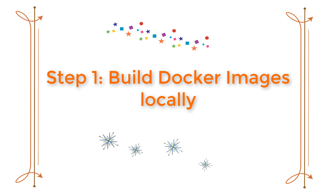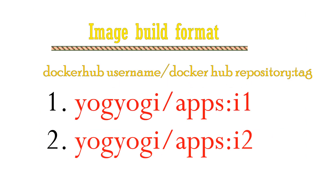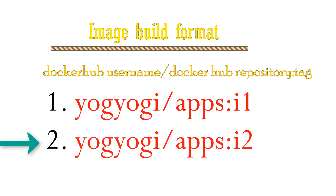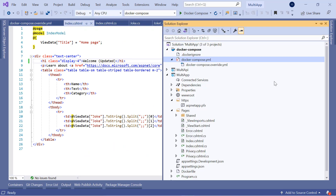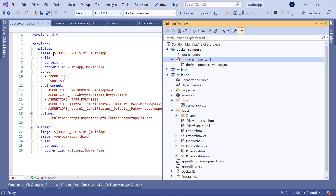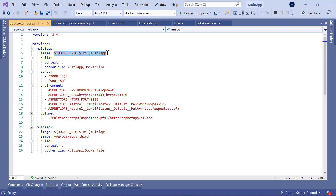To build the images locally, I have to build them in the format of Docker Hub username slash Docker Hub repository colon tag. My Docker Hub username is yogiyogi and my Docker Hub repository is apps. So I will name these two images as yogiyogi/apps:i1 and yogiyogi/apps:i2, where i1 and i2 are the tags. Open the docker-compose.yml file of the multi-container ASP.NET Core app and name the images in this format.